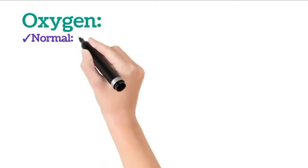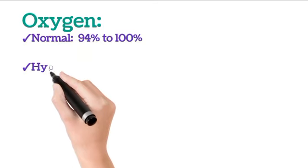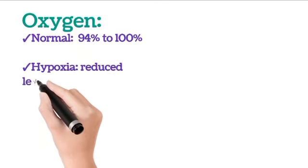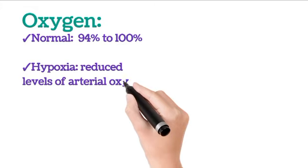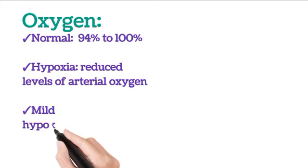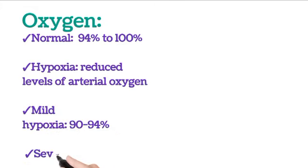Oxygen normal and abnormal ranges. Normal: 94% to 100%. Hypoxia: Reduced levels of arterial oxygen. Mild hypoxia: 90 to 94%. Severe hypoxia: Less than 86%.